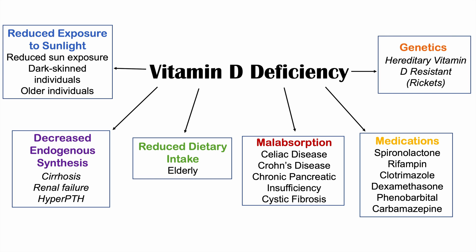Another category is genetic causes. There is a genetic condition called hereditary vitamin D resistance, which we call hereditary vitamin D resistant rickets. Even though the patient has absorbed vitamin D and there's nothing wrong with its production, it's not being able to be used properly.